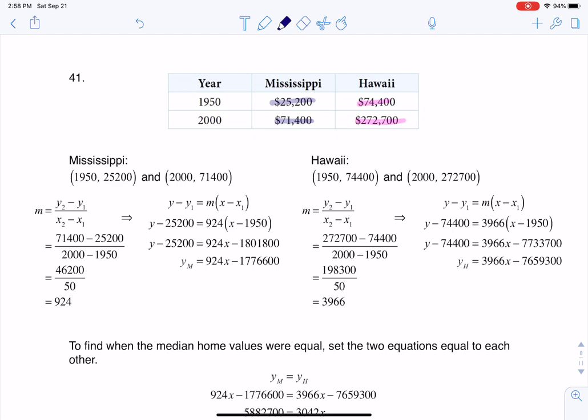Now, if I want to find the linear trends, what I have here are two ordered pairs, and I can figure out the linear model that goes between them. So for Mississippi, we had the ordered pairs of 1950, $25,200, and then 2000, $71,400. So if I want to find the line between those two points, the first thing I need to do is find the slope.